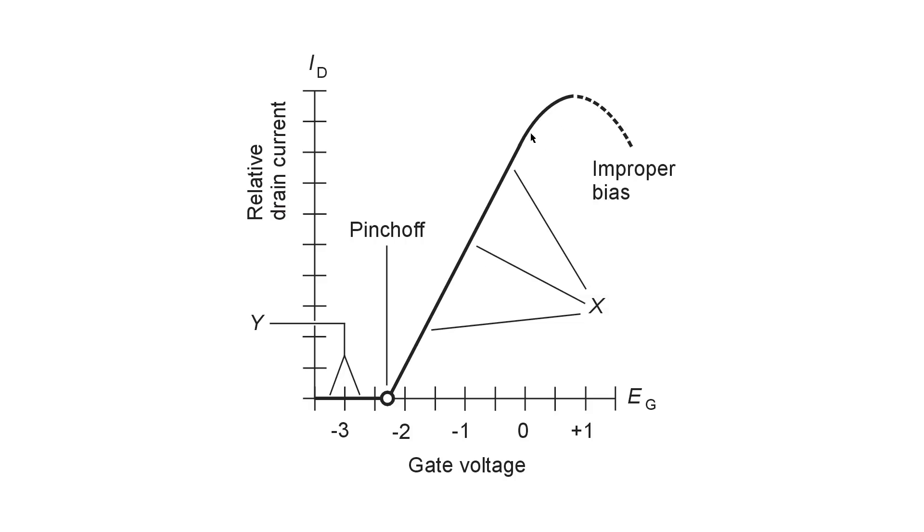If you get too much positive voltage at the gate, though, and this is assuming no signal input, all of these points assume no signal input, then the relative drain current starts to increase at a slower and slower rate until it reaches a maximum.